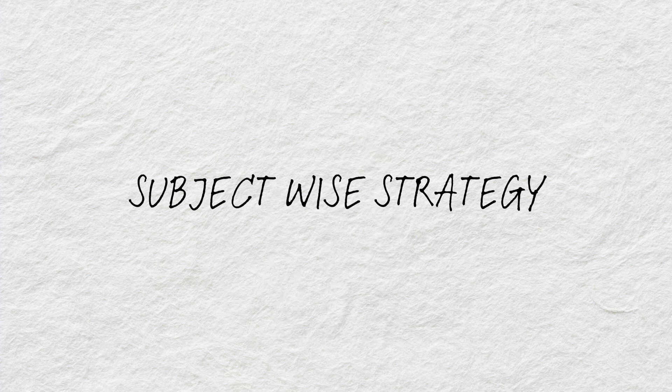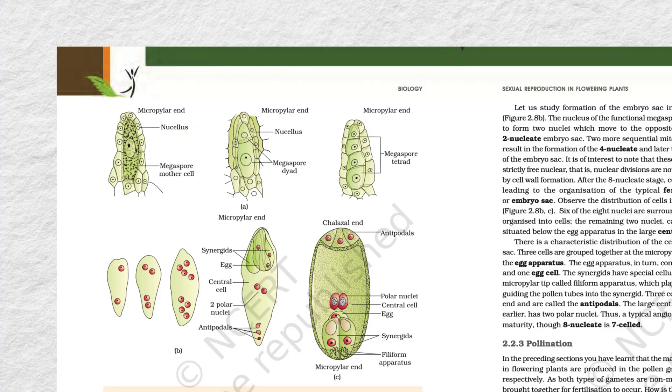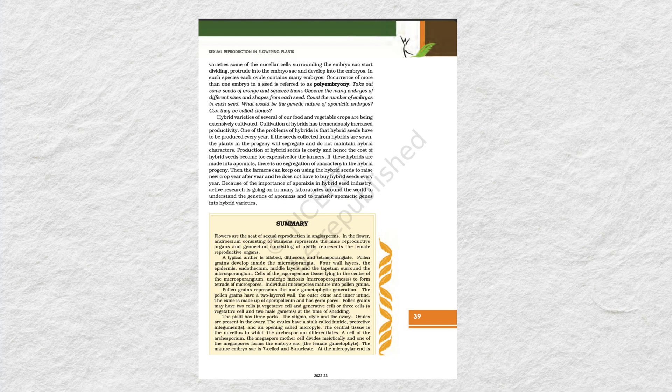Now let's simplify the strategy for each subject. First, biology. If you study NCERT sincerely, line by line, you can easily score 300-320 marks in biology alone. Every line, every diagram, every summary after each chapter is pure gold.